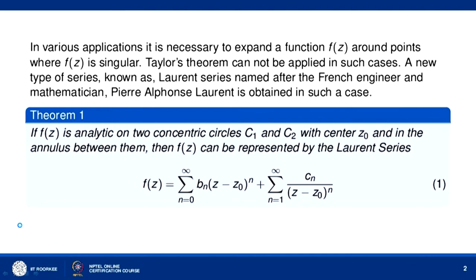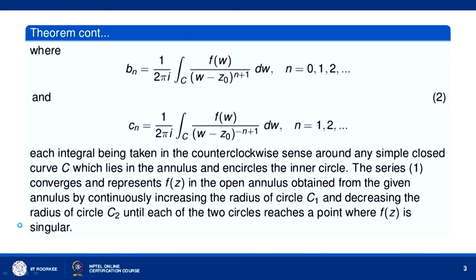The values of b_n and c_n are given by the integrals: b_n = (1/2πi) ∮_C f(w) dw / (w - z0)^(n+1), where n = 0, 1, 2, 3, and so on; and c_n = (1/2πi) ∮_C (w - z0)^(n-1) f(w) dw.